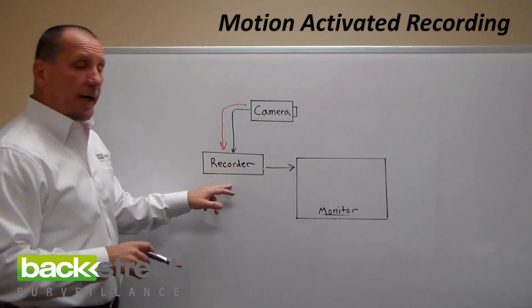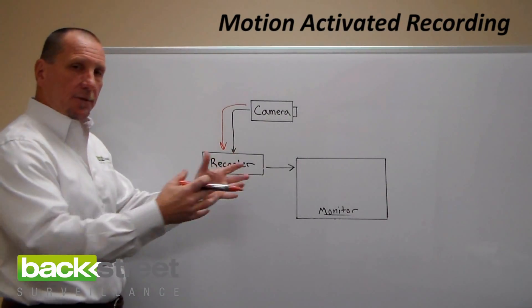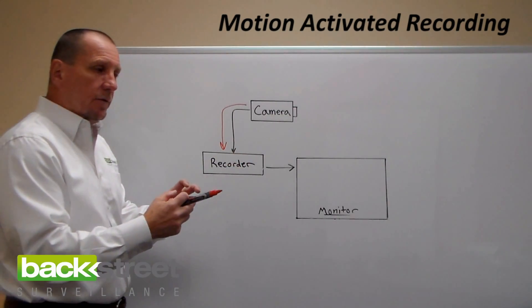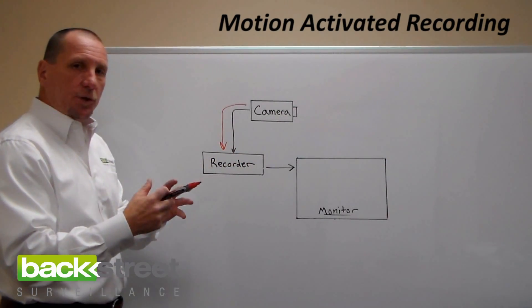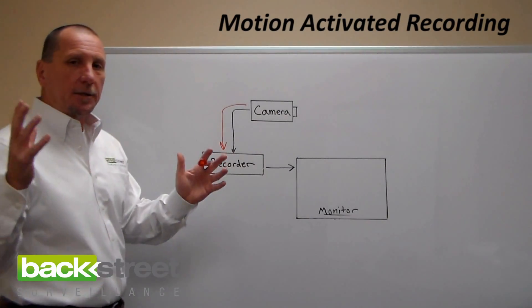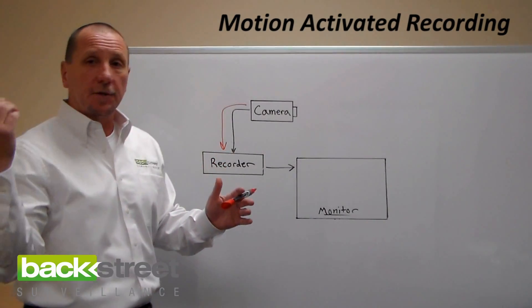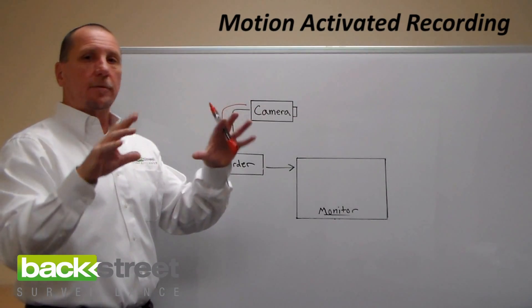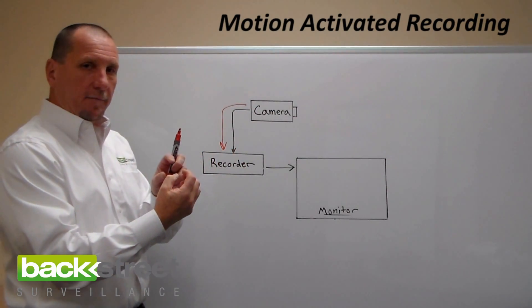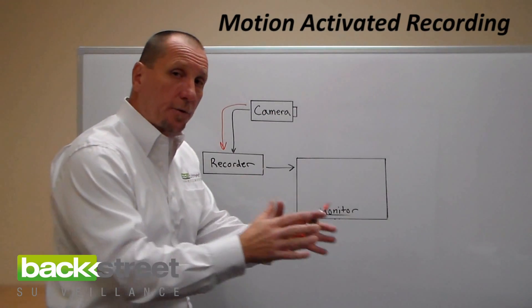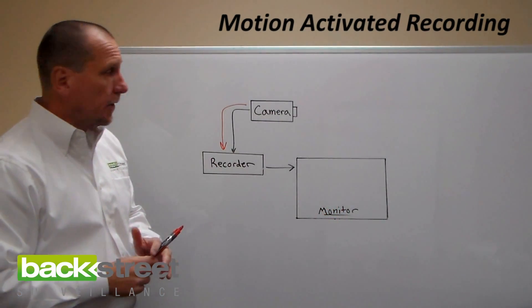The recorder has algorithms built into it. On each camera, it's monitoring the pixels coming in and the algorithms are so refined and powerful they can detect when there's motion — not just when there's change. You get change when a cloud goes over the sun and all the pixels randomly change. The algorithms detect a group of pixels changing and what directions they're moving in, and it knows to trigger motion recording.